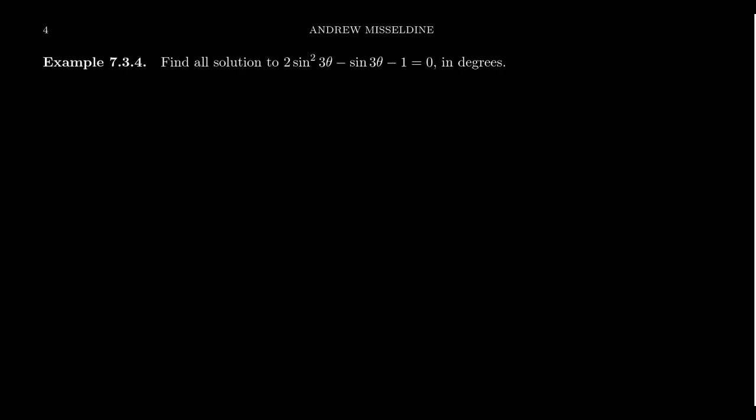We can do that by factoring, completing the square, or quadratic formula. Looking at the coefficients here, we have a 2 and a negative 1. Those come together to take 2 times negative 1, which is negative 2. I need factors of negative 2 that add to negative 1, that is this negative 1 right here. And we see that if you take negative 2 plus 1, that gives you a magic pair. So I could factor this thing, I could use the reverse FOIL method.